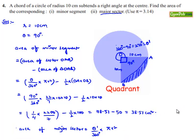That equals (270/360) times 3.14 times 10 squared, which equals (3/4) times 3.14 times 100.